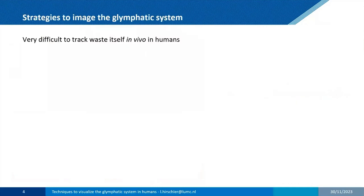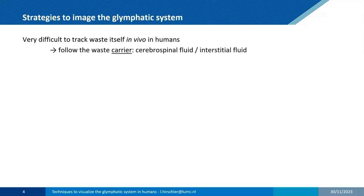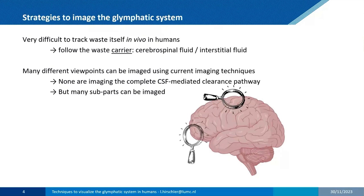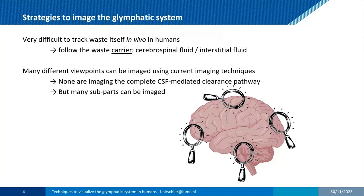One of the challenges is that imaging the glymphatic system is very difficult — you can't directly track waste in humans, but you can follow the waste carrier, which is the cerebrospinal fluid or interstitial fluid. Currently there are many different techniques that exist, but none of them image the whole clearance pathway. I'll give an overview of some of them.